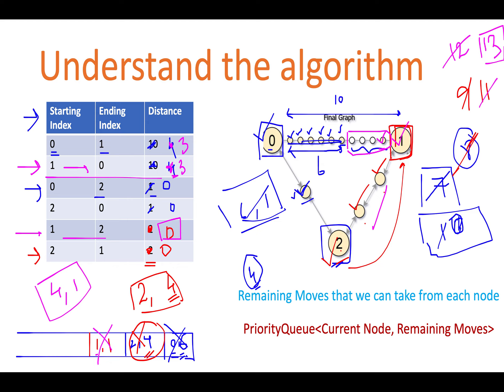Since we are done with the iteration, the final answer is 13. This tells us the complete picture of how we make moves while keeping track of the remaining moves possible from each node. If there's any confusion, everything will be crystal clear in the coding section — so let's move on to the coding part.